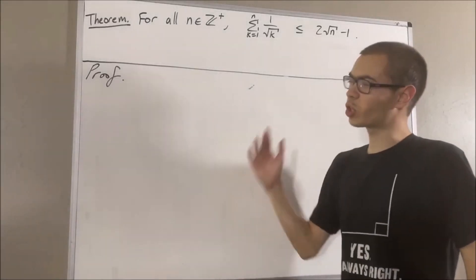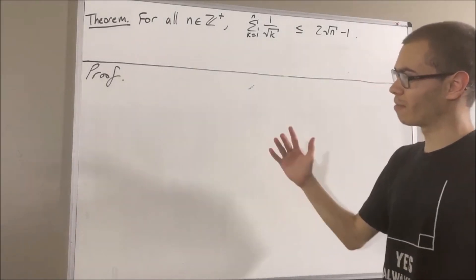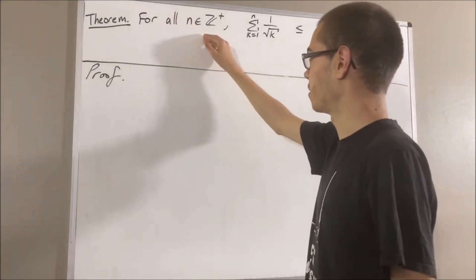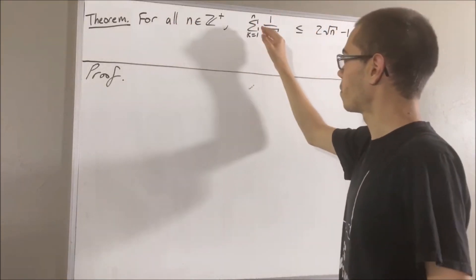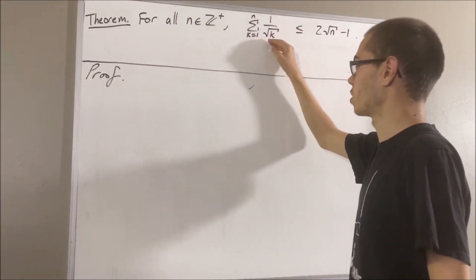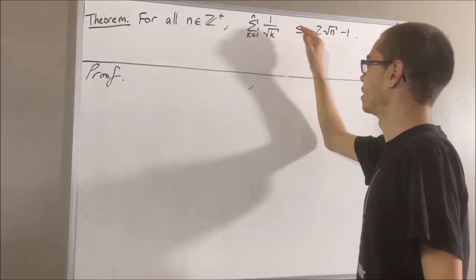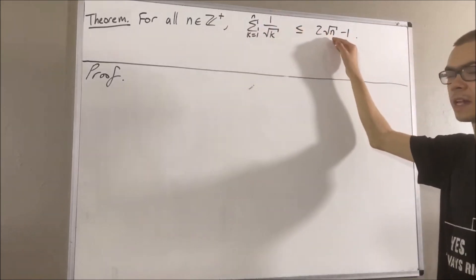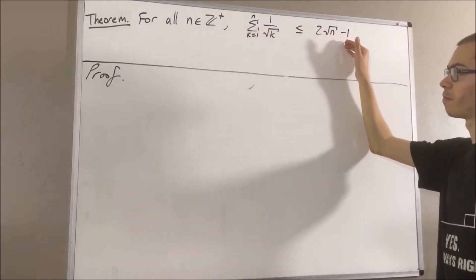In this video, we are going to prove the following theorem: for all positive integers n, the sum from k equals 1 to n of 1 over the square root of k is less than or equal to 2 square root of n minus 1.